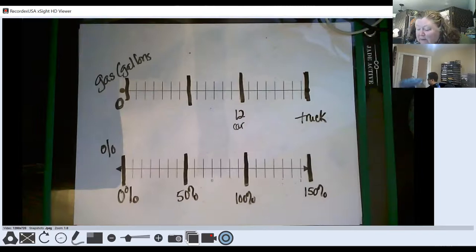We used our information about percents to compare the gallons. If this is 12, then this was 6, and so this space is 6, 6, 6. So that would mean 6, 12, 18.